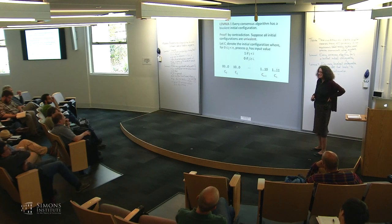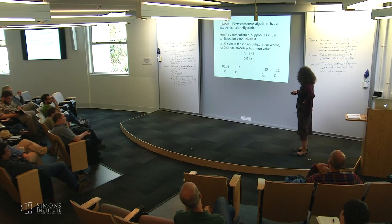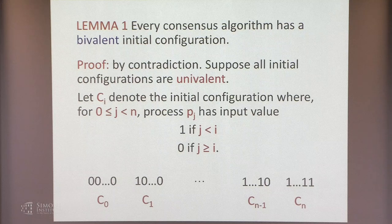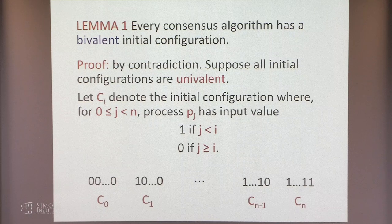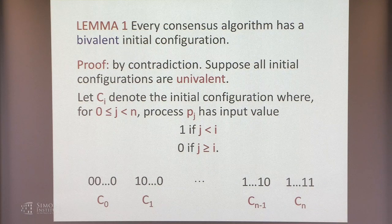Every consensus algorithm has a bivalent initial configuration. We do a proof by contradiction and assume all initial configurations are univalent. Let C0 be the initial configuration where every process has input 0, and C_N be where every process has input 1. By validity, C0 is 0-univalent and C_N is 1-univalent — since all inputs are 0 starting from C0, they have to output 0, and similarly from C_N.